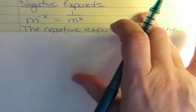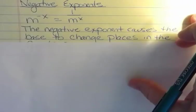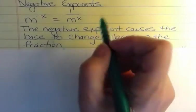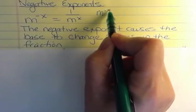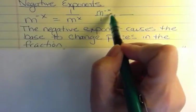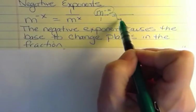If you think about it, the negative exponent causes the base to change places in the fraction. This started off in the numerator, even though we didn't see it, and so when it becomes positive, we put it in the denominator.